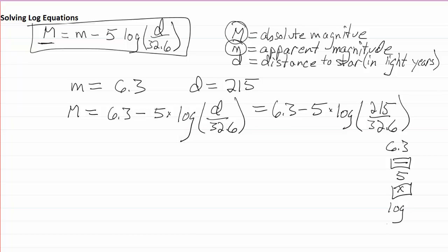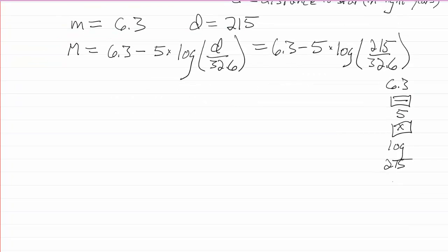And so you'd go 215, then hit the divided by button, 32.6, hit the right parenthesis button, and then hit equal. And when you do that, you'll get the result of this calculation.